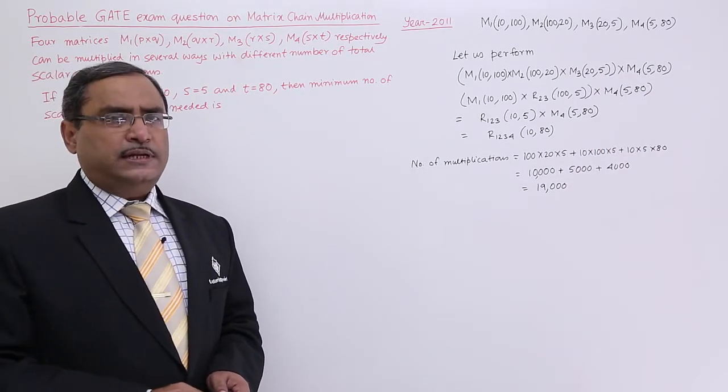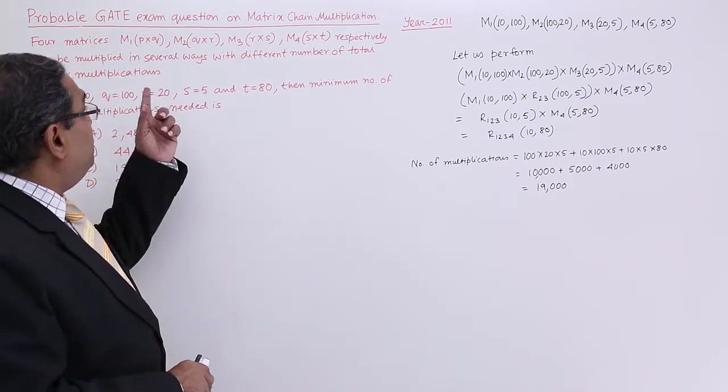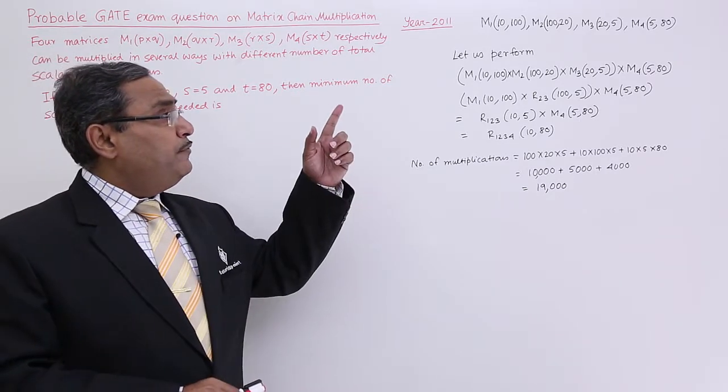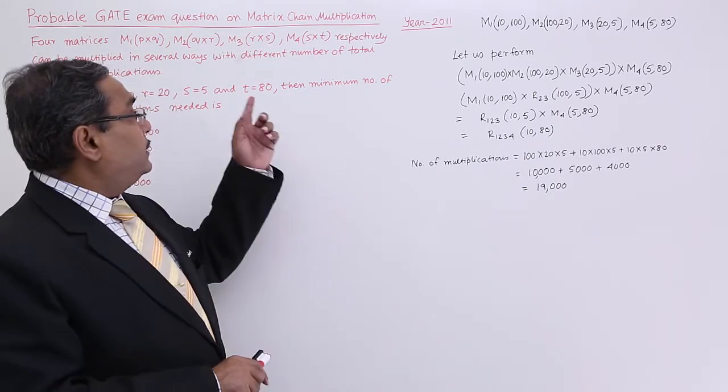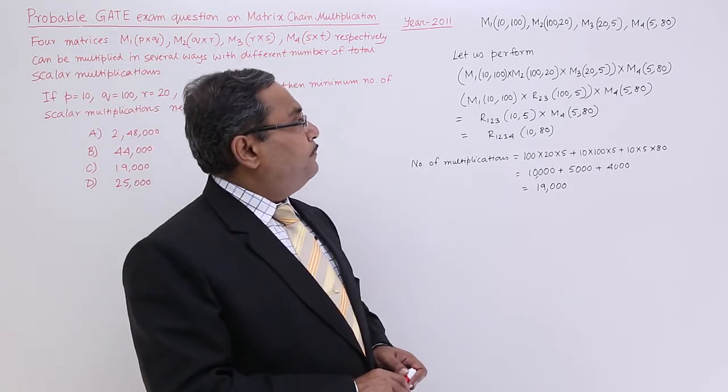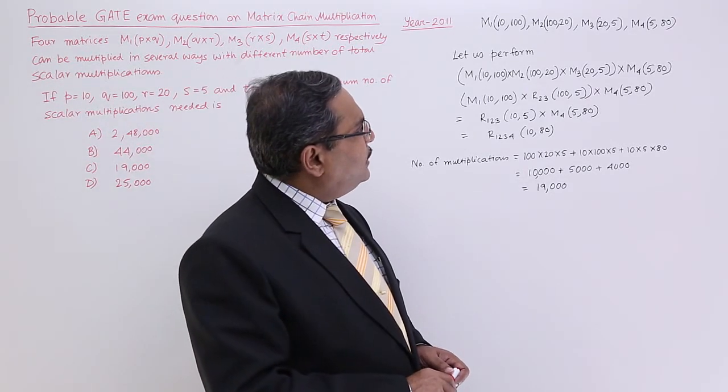Let us suggest some scheme here. So, in place of P, Q, R, S, T I have written the dimensions, whatever the dimensions they gave. So, now we are making one strategy like this one.